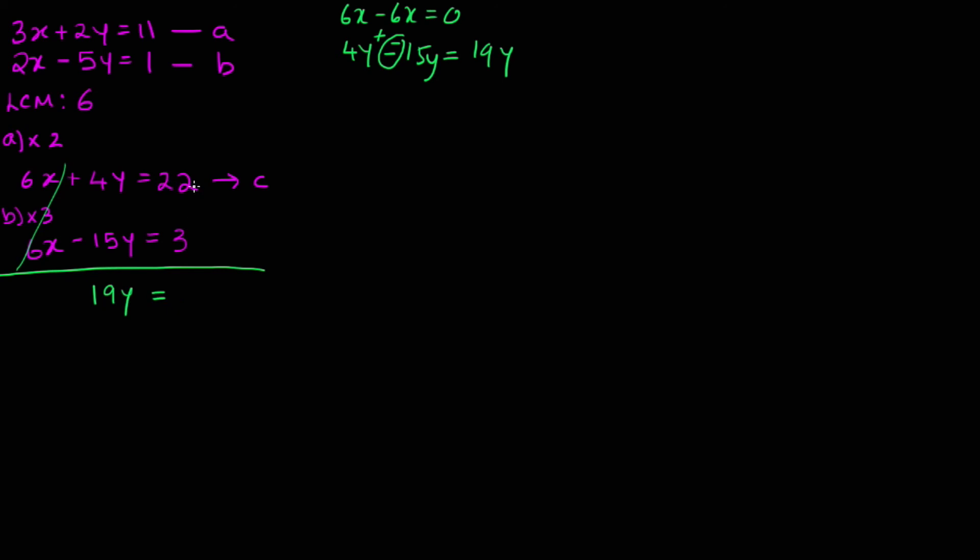And that gives you 22 take away 3? 19. There's no Y here. Oh, 19, sorry. Okay. So how do we find Y? We divide both sides by 19. So Y is equal to 1.